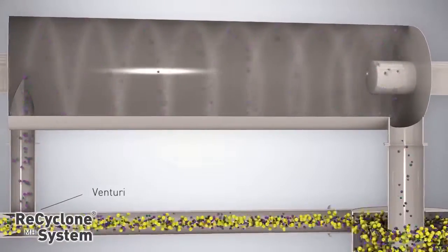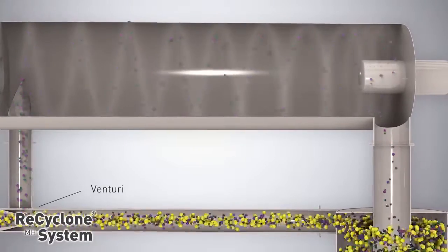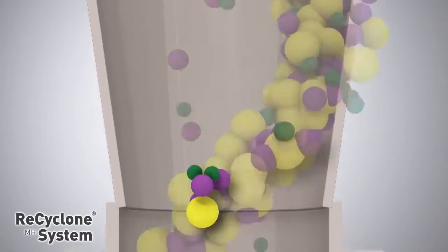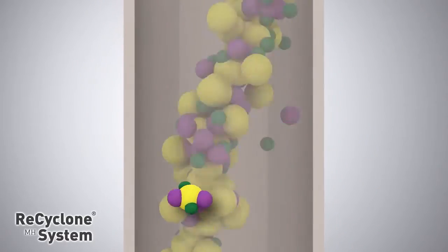Recirculation not only provides more opportunities for the particles to be collected, but also promotes agglomeration of small particles with larger particles coming directly from the process.